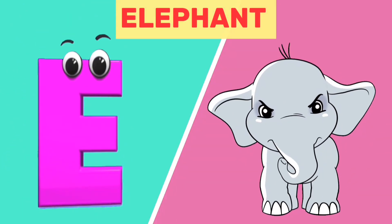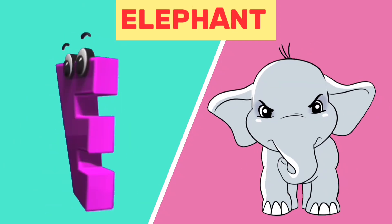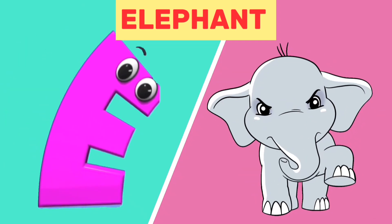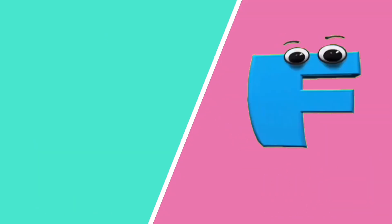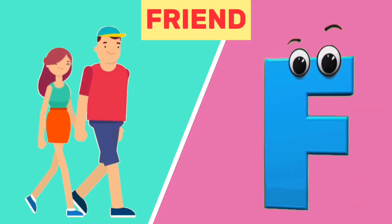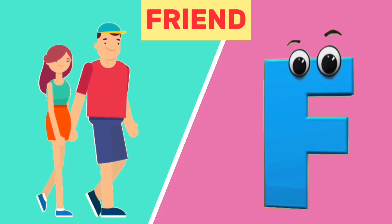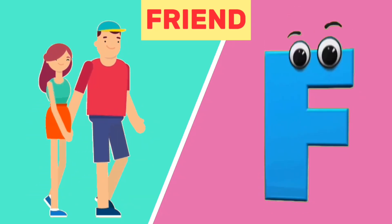E is for elephant. E, e, elephant. F is for friend. F, f, friend.